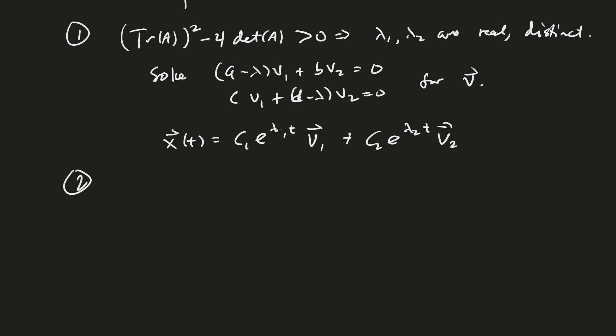And then case 2 is where the trace of a squared minus 4 times the determinant of a is less than 0. Then lambda equals alpha plus beta i. Notice that I'm just using one of those, like we were talking about before.